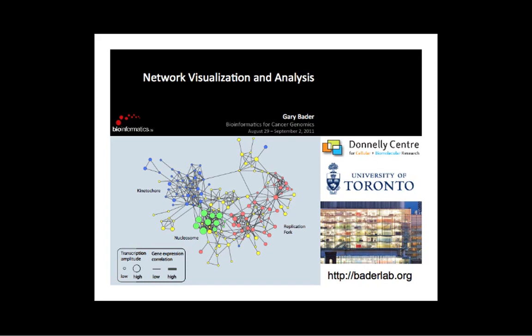Another question from the lab: how is this different from Ingenuity? Ingenuity is a commercial package that does enrichment analysis with their own curated database — they probably use gene ontology but also curate additional content. If you use different tools and get different results, it's probably because they use different versions of gene ontology — one downloaded in 2010 versus one downloaded recently, since gene ontology is growing all the time. They might also use different gene sets or slightly different statistical methods and multiple testing corrections.